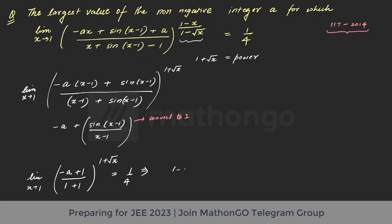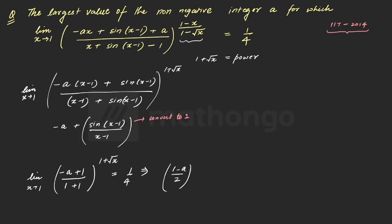Now this is very simple to solve, right? You have 1 minus a by 2 and limit. Now if you notice what will happen, limit is also easy to solve. We will just put 1 plus root 2 that is 2 and this is the limit. And you will solve this to get a value of a as 0 or a as 2.